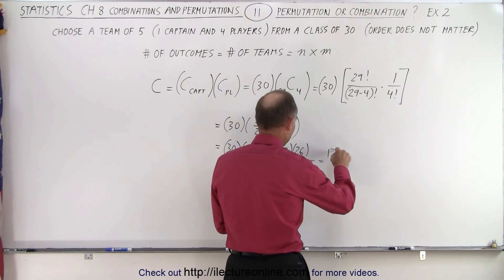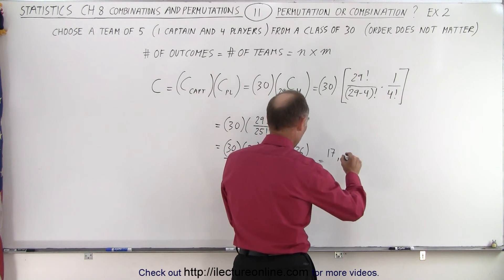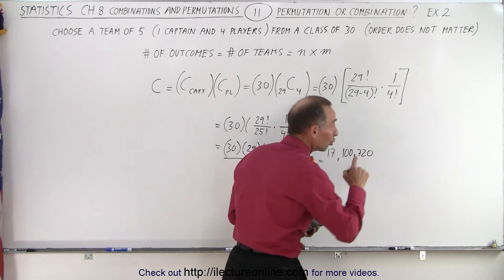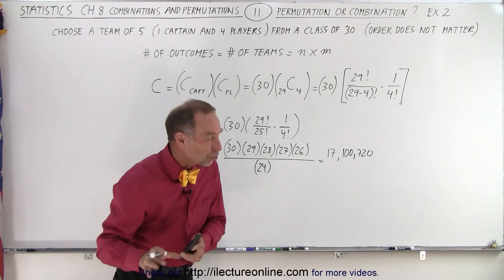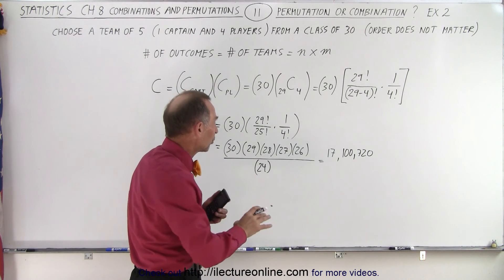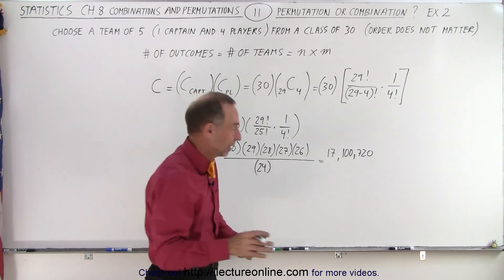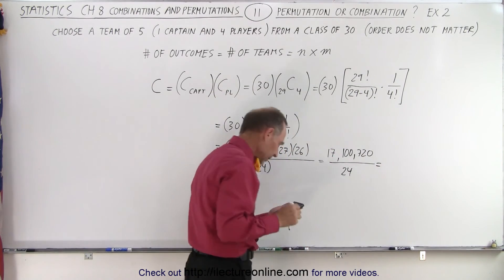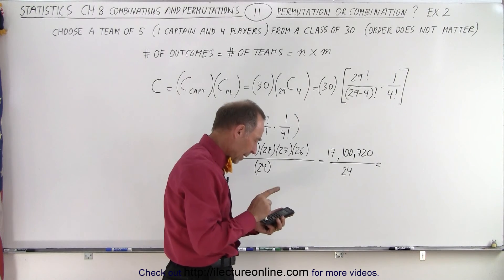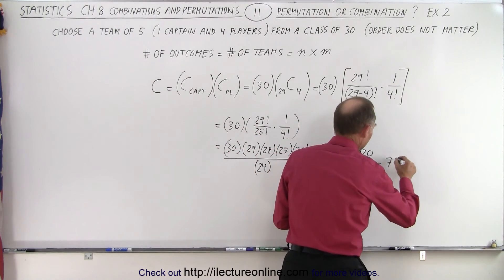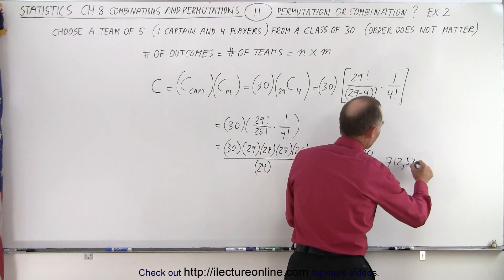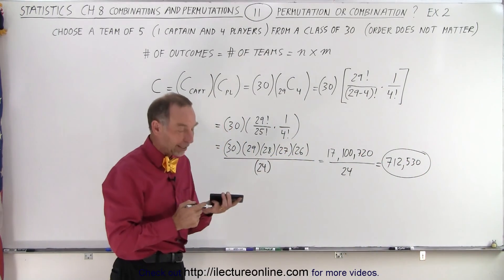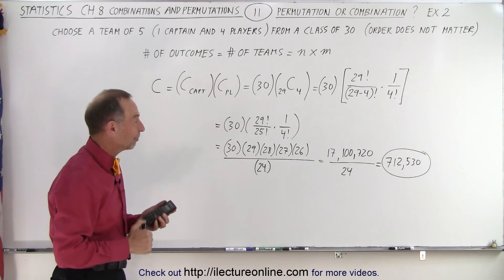So this is equal to 17,100,720. That would be the total number of permutations if you were to pick five students and order mattered. And now we divide that by 24, and we get 712,530 different combinations—different teams that we could pick if we need one captain and four players.